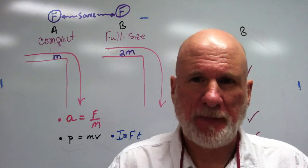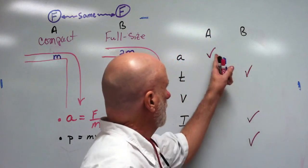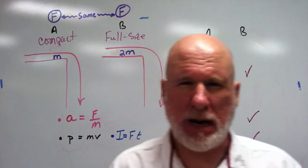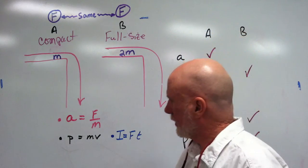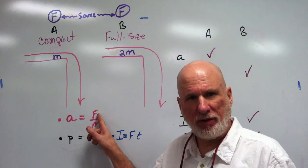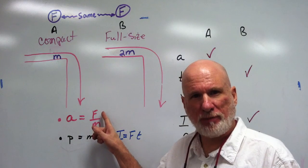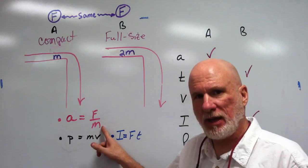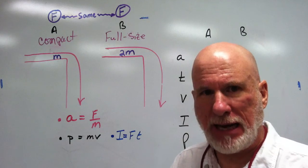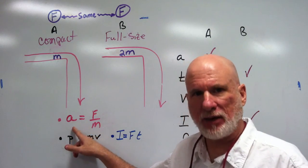Let's see how we did. The first one, acceleration, is probably the easiest. Remember it's the same force for both. So the one with the smaller denominator will have the greater acceleration.